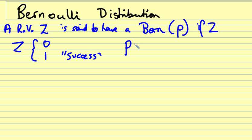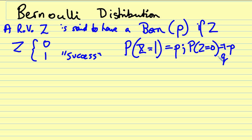And the probability that Z takes on the value one is given by p. Therefore, the probability that Z takes on the value zero must be given by one minus p, which we sometimes denote as q.